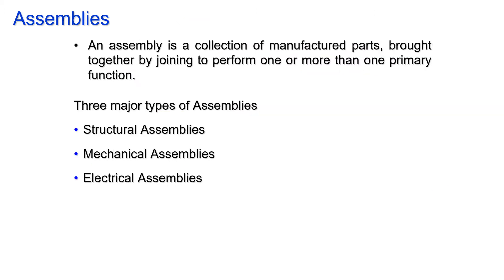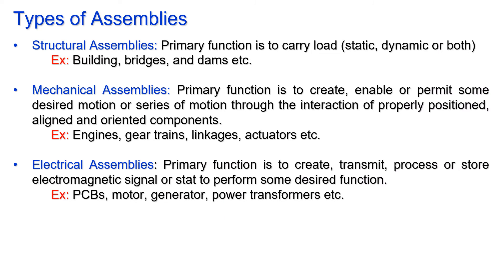An assembly is a collection of manufactured parts brought together by joining to perform one or more primary functions. There are three major types of assembly: structural assembly, mechanical assembly, and electrical assembly.